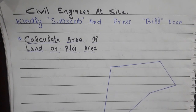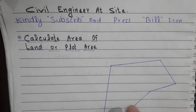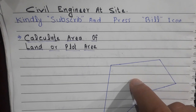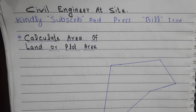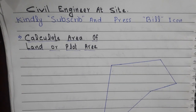Dear students, sometimes we may need to know the area of any land or plot for various reasons, such as buying or selling land or house construction. In this video I will explain how to calculate the area of land or a plot. First of all, we divide the land area or plot area into different geometrical shapes such as rectangles, triangles, squares, etc. After that we calculate the area of every shape and then sum all the areas together.